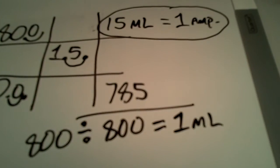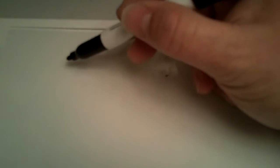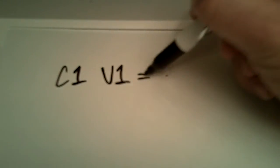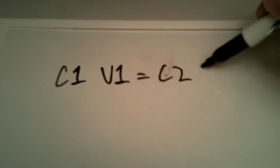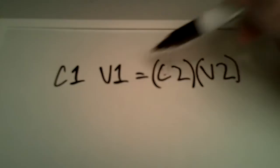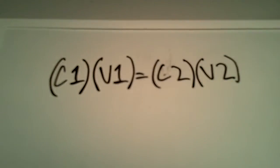Hopefully you understood all that. It's usually not that easy, but in this case it worked out really nicely. The other way that you could do this is to use the equation C1V1 equals C2V2. I'm going to put parentheses around these just so everybody's on the same page knowing that we're going to multiply these together.